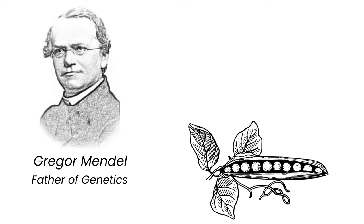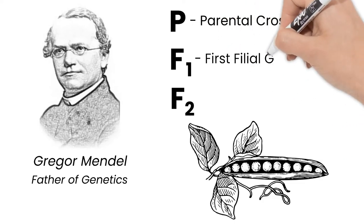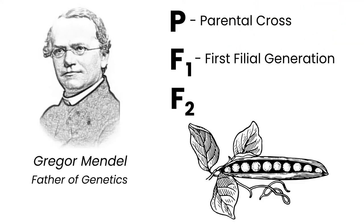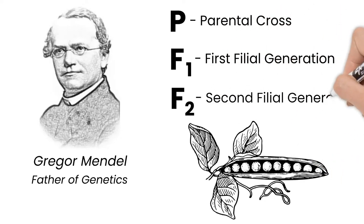To keep track of generations in genetics, we use P, F1, and F2. P stands for parental cross, F1 for first filial generation, and F2 is the second filial generation.